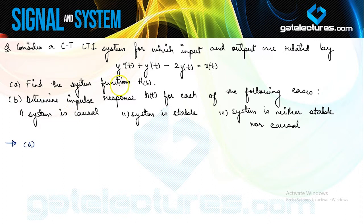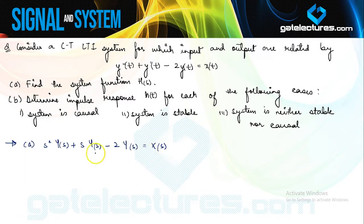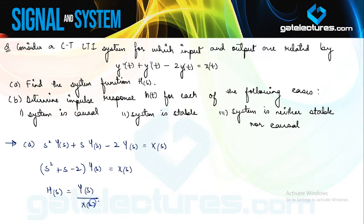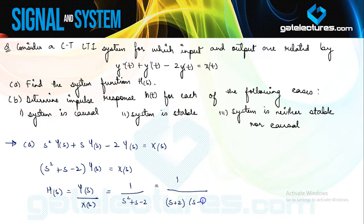Let us start with this question. I take the Laplace transform of the given differential equation. Using the differentiation-in-time property, the Laplace transform gives s²Y(s) + sY(s) - 2Y(s) = X(s). Taking Y(s) common: (s² + s - 2)*Y(s) = X(s). The system transfer function H(s) = Y(s)/X(s) = 1/(s² + s - 2). Factorizing, the roots are +2 and -1 for the sign, giving H(s) = 1/[(s+2)(s-1)].